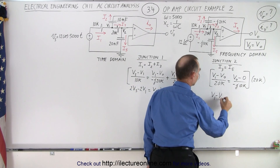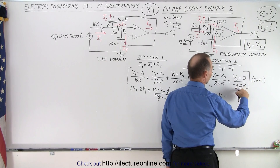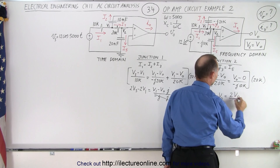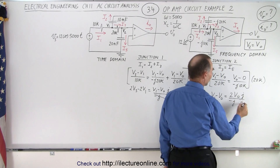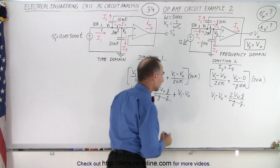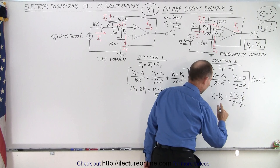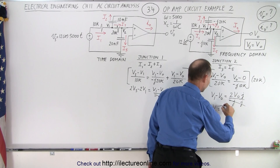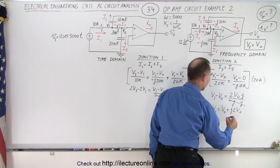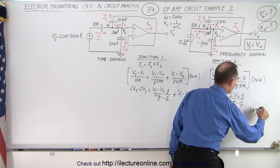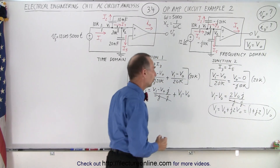Over here, we have V1 minus V_out is equal to — notice that the minus zero disappears — that would be two times V_out divided by, we still have a minus J, but again we multiply both top and bottom by J. J times J is negative one, times the negative one, that cancels out. Let's bring the V_out over: V1 is equal to V_out plus J·2·V_out, or simply (1 + J2)·V_out. So here we have a relationship between V1 and the output voltage.